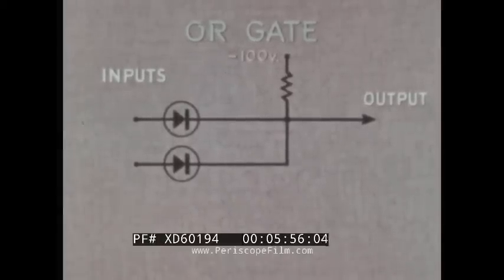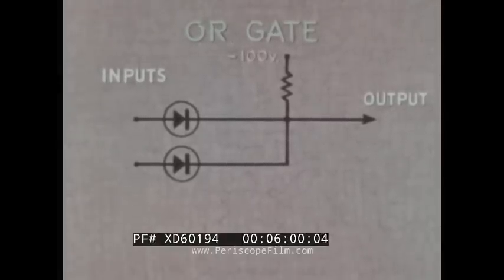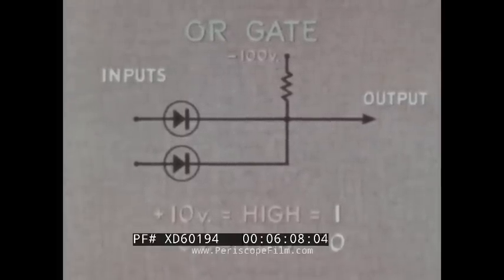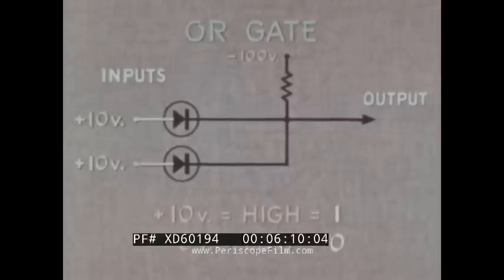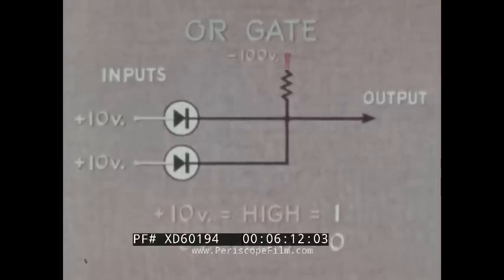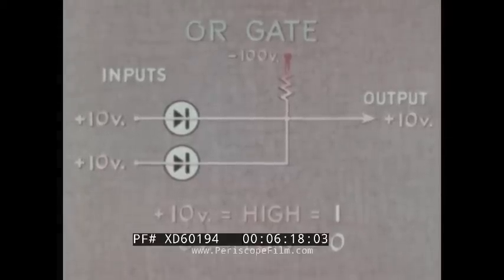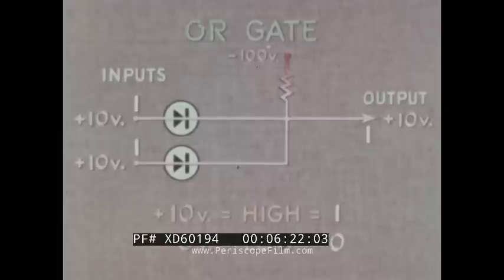This circuit is the exact opposite of the AND gate. The inputs, as before, may be plus 10 volts and zero volts as high and low. When both inputs are high, both diodes conduct and the voltage at the output point is high. With binary ones as inputs, the output is one — correct OR gate performance.